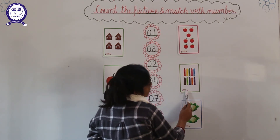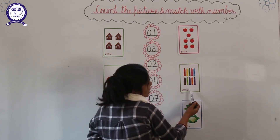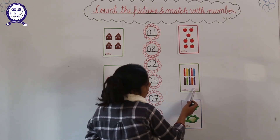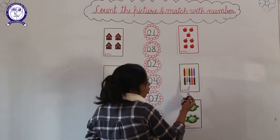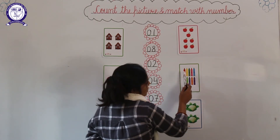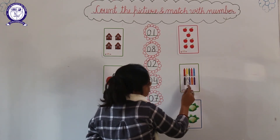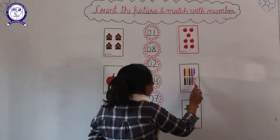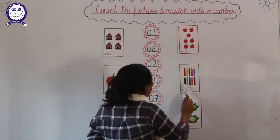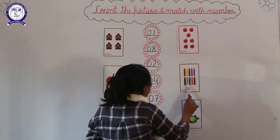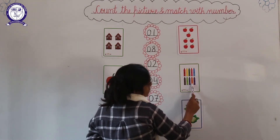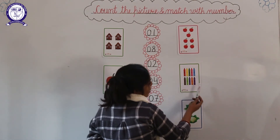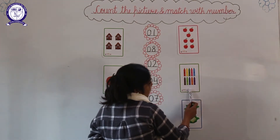Look here — which picture is this? These are colors. And how many colors are there? Count them: 1, 2, 3, 4, 5, 6, 7, 8, 9 and 10. It means there are 10 colors.